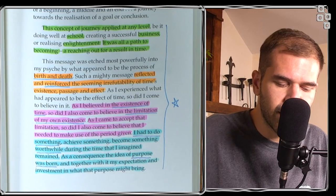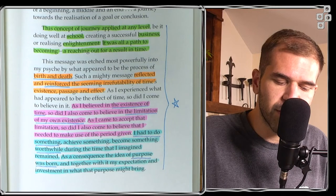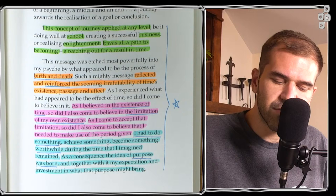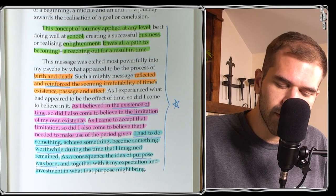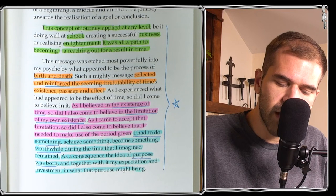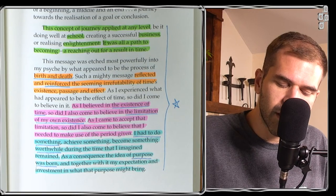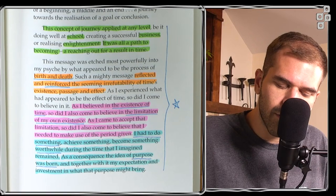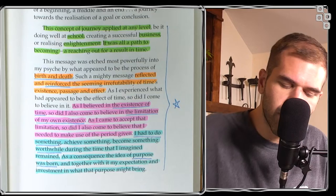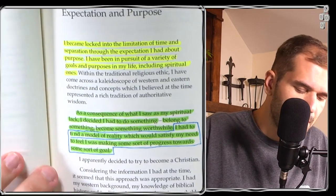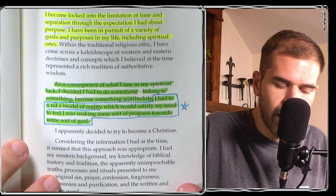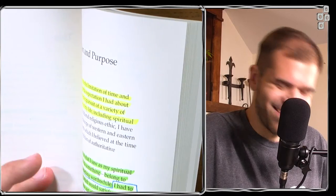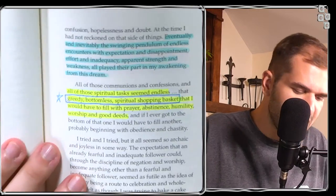Those who have fully comprehended and embraced enlightenment have absolutely nothing to sell. The concept of journey applied at any level - school, business, enlightenment - is all a path to becoming, reaching out for a result in time. Birth and death reflected and reinforced the seeming irrefutability of time's existence, passage, and effect. As I believed in the existence of time, so did I also come to believe in the limitation of my own existence. As I came to accept that limitation, so did I also come to believe that I needed to make use of the period given. I had to do something, achieve something, become something worthwhile during the time that I imagined remained. As a consequence, the idea of purpose was born, and together with it, my expectation and investment in what that purpose might bring.